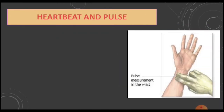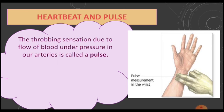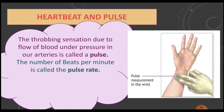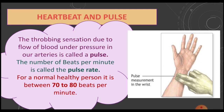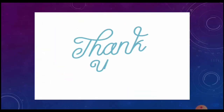When we place the middle and index finger of our right hand on the inner side of our left wrist, we feel some throbbing. This throbbing sensation is due to the flow of blood under pressure in our arteries, and it is called a pulse. The number of beats per minute is called the pulse rate. For a normal healthy person it is between 70 to 80 beats per minute, but whenever we do physical activity like cycling or running, the pulse rate increases. Here we come to the end of today's topic. Thank you.